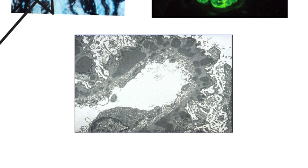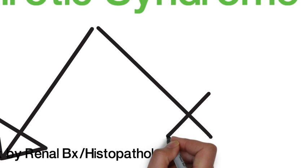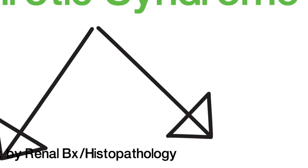And you can also see on electron microscopy, as shown here, the capillary loop with the sub-epithelial electron-dense deposits. The idiopathic cases are associated with antiphospholipid A2 receptor antibodies. Other causes include underlying cancer.